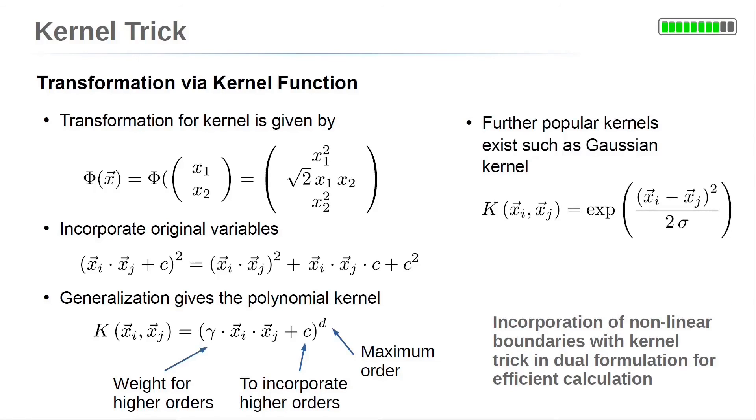There are plenty of other kernel functions to incorporate other variable transformations. For example, the Gaussian kernel. It is given by the exponential function of the square difference vector of xi and xj over 2 times sigma. The hyperparameter sigma can be adjusted to your needs and corresponds to a standard deviation.